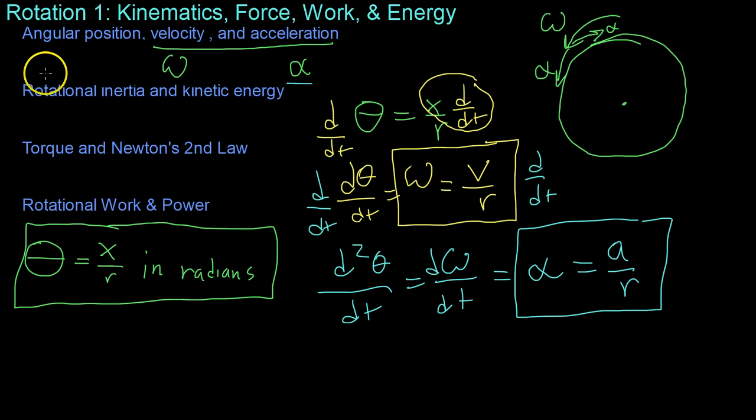It should be noted, however, that despite the fact that theta is dimensionless, it's in radians, because radians are dimensionless, and you're dividing through by seconds each time to get these respective velocities and accelerations, so that omega has the units seconds to the negative one, and alpha has the units seconds to the negative two.